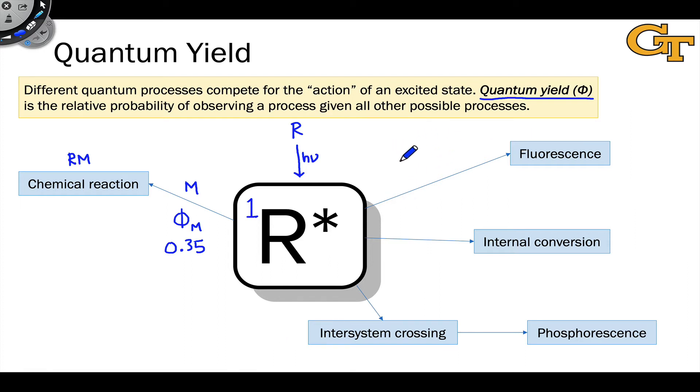Let's continue for the other processes. So we have a quantum yield of fluorescence, phi F, and let's throw down a number there, let's say 0.050. We have a quantum yield for internal conversion from let's say the S1 to the S0 state and let's call that 0.1. And we have a quantum yield for inter-system crossing.